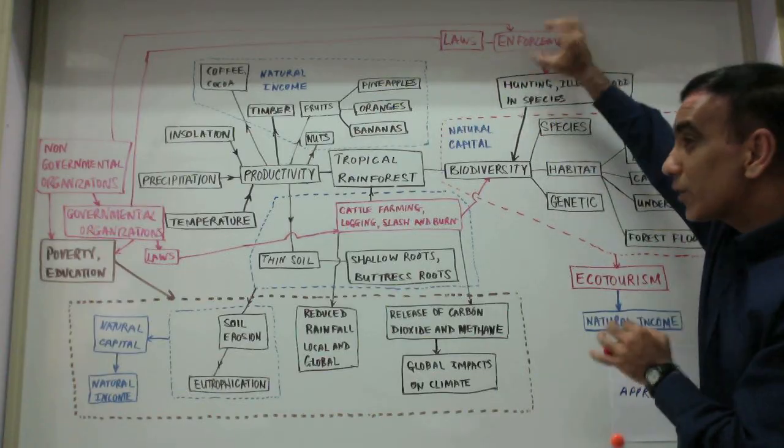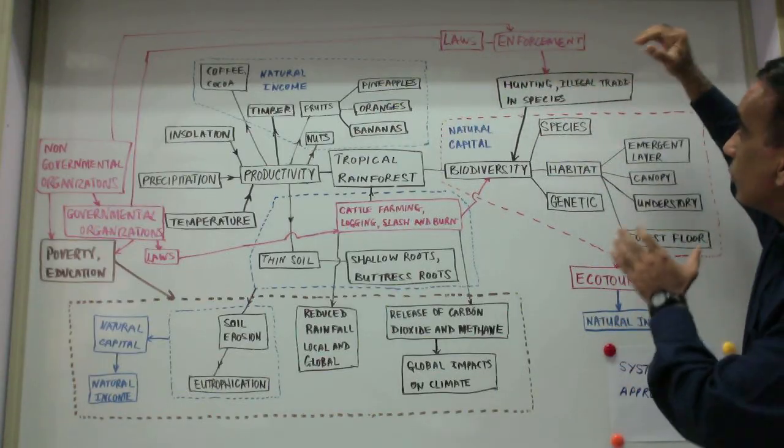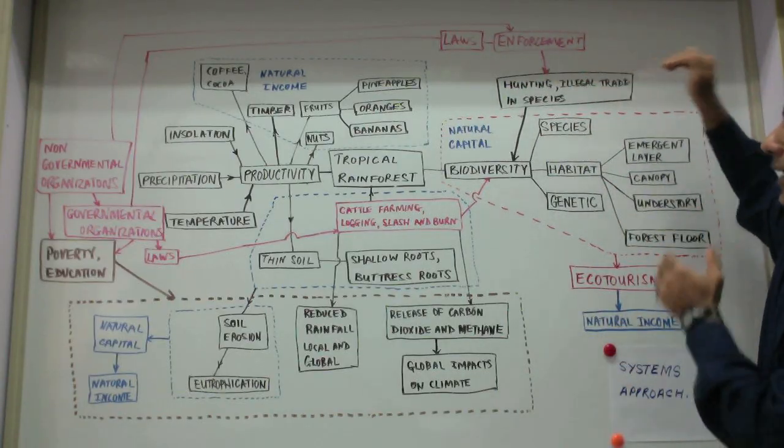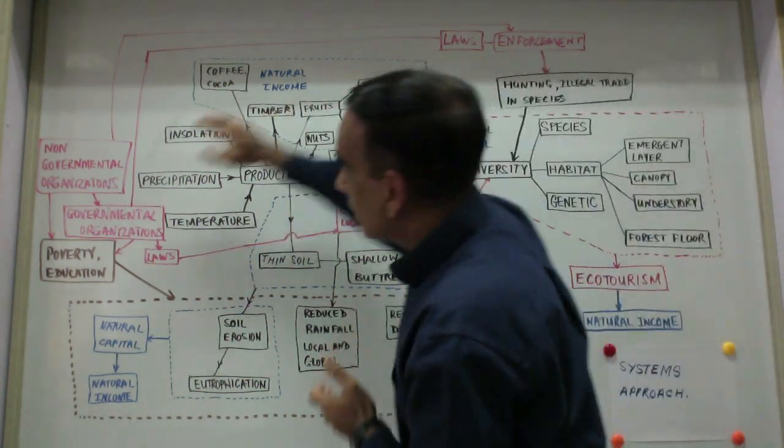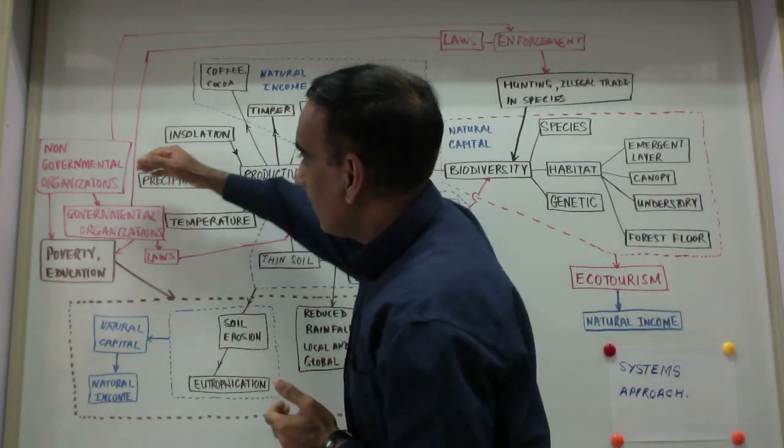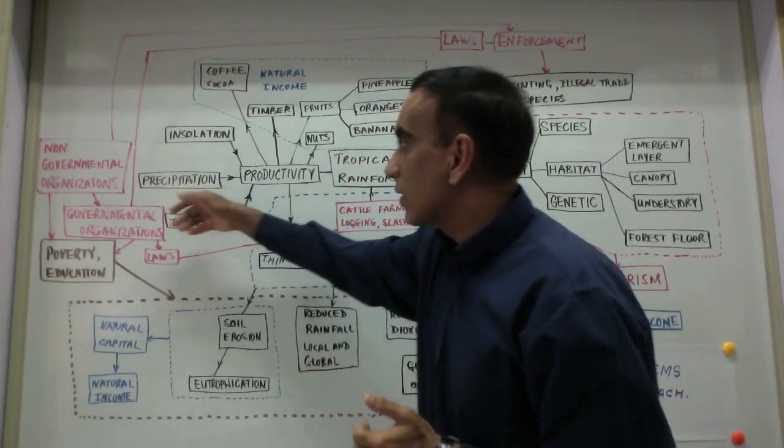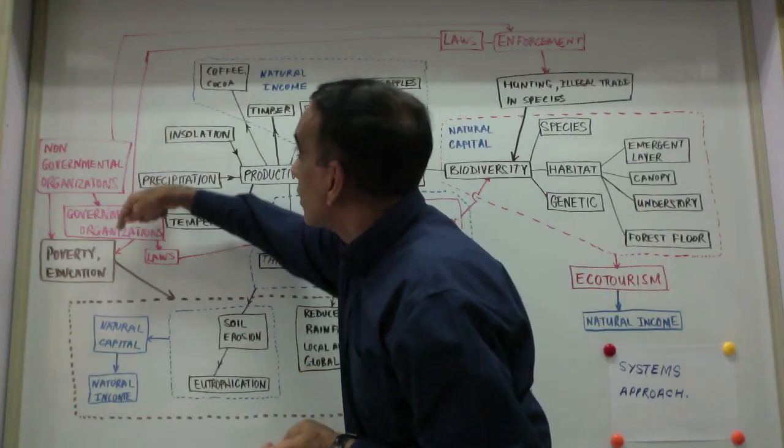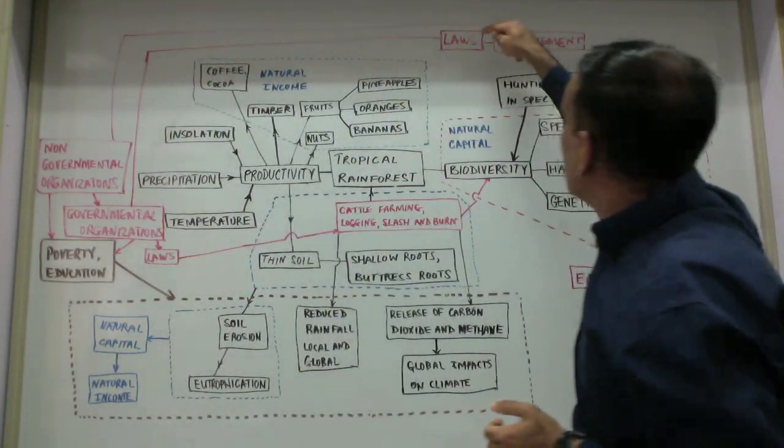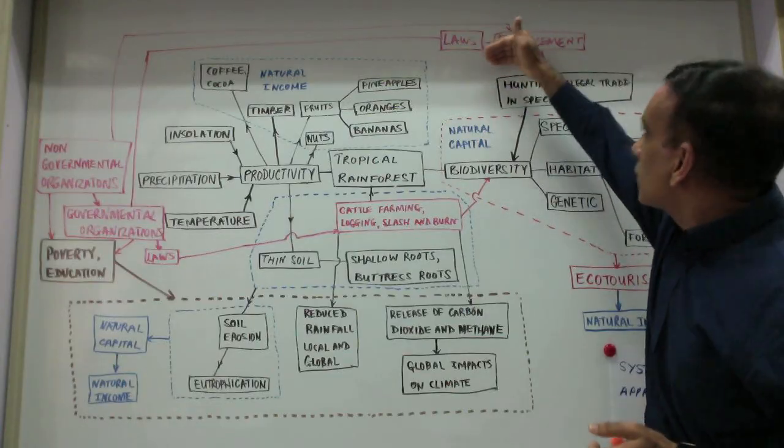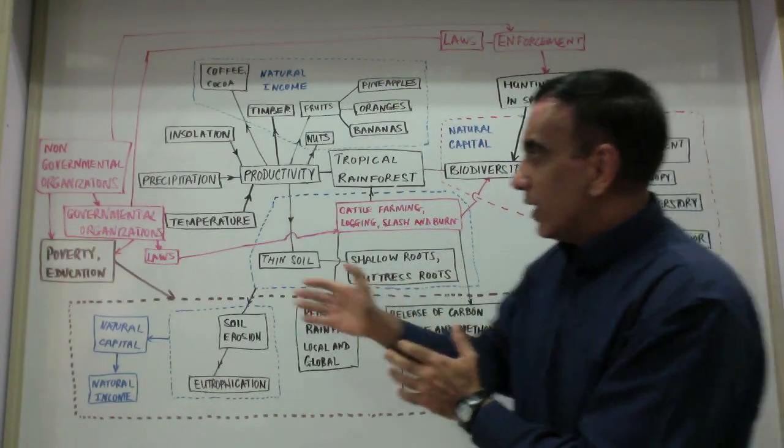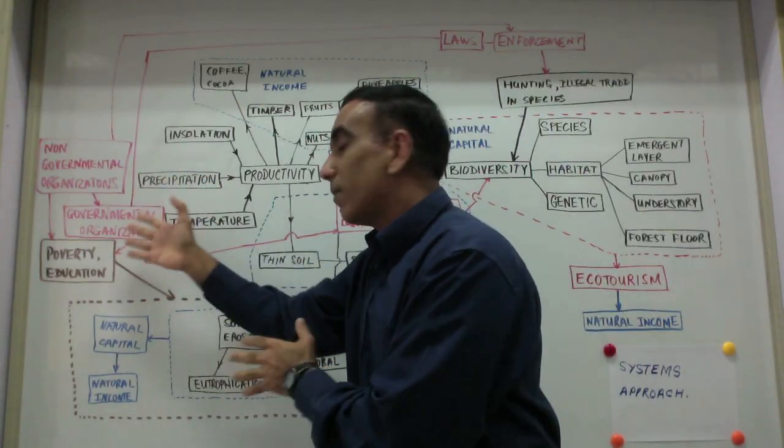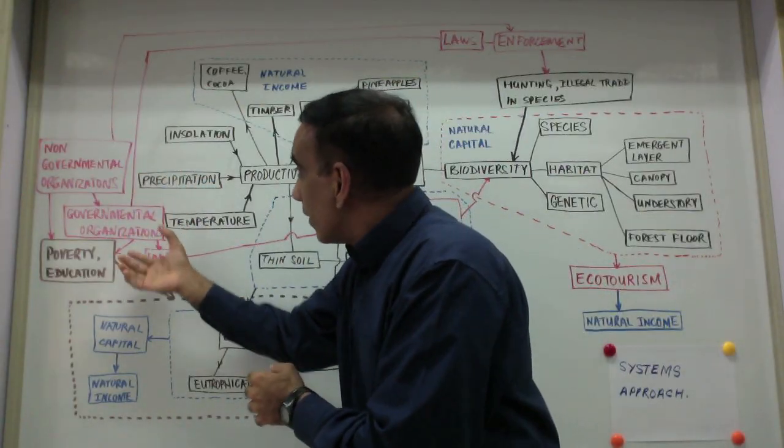And laws are needed and enforcement of these laws are needed to reduce illegal hunting and illegal trade in endangered species. And non-governmental organizations can serve as watchdogs over governmental organizations who seek to put laws in place but often lack the power to enforce these laws. And a role for NGOs is to bring pressure upon governmental organizations to help with the enforcement of laws.